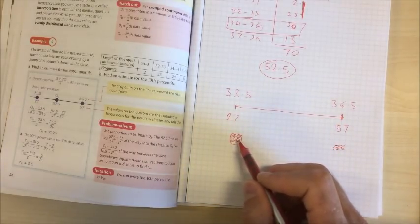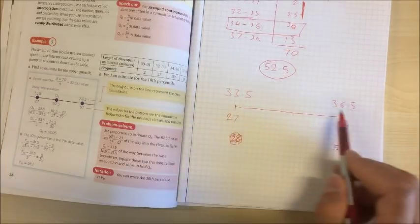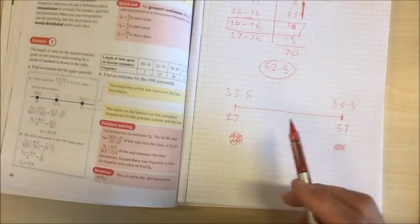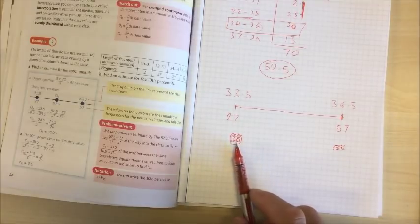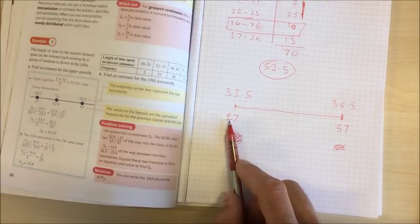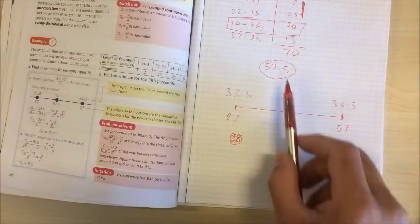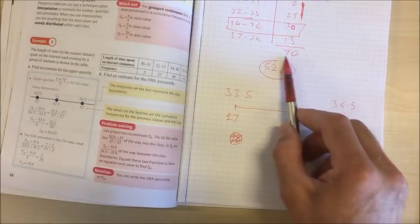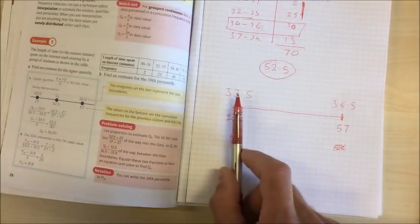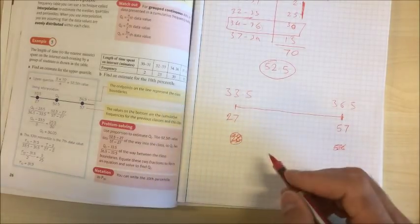If we were looking for the 15th piece of data out of those 30, well that would be piece of data number 42 wouldn't it, 27 add 15 is 42. So if we wanted the 42nd piece of data out of these 70 that would be halfway between 33.5 and 36.5. That's the principle we're working on here.